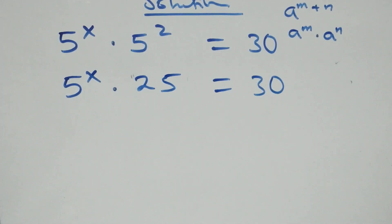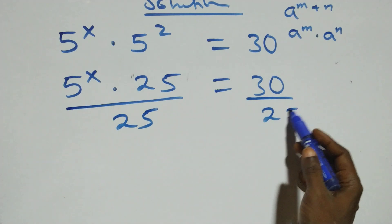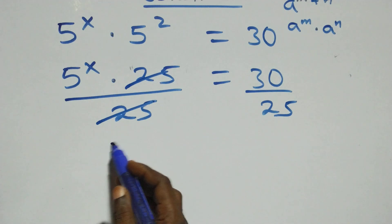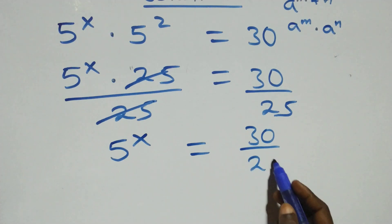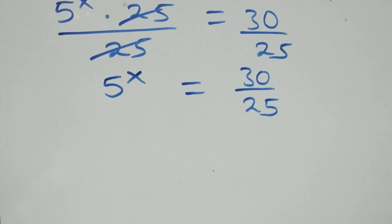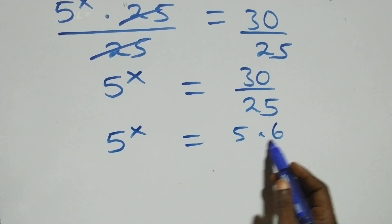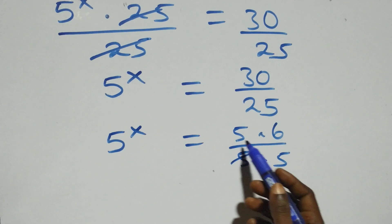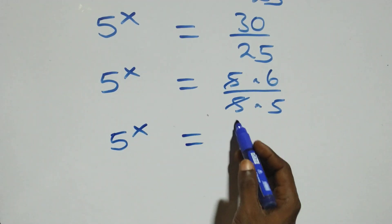The next step here, we divide both sides by 25. Divide this side by 25 also, which implies here 25 cancels each other, and we are left with five raised to power x equals to thirty over twenty-five. We can write this as five raised to power x equals to six over five.